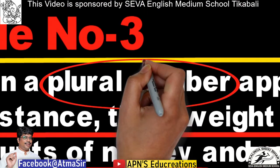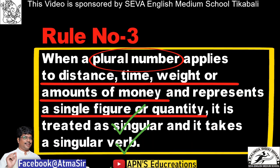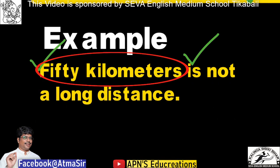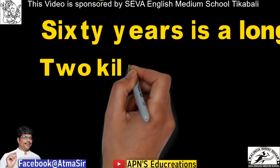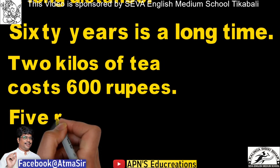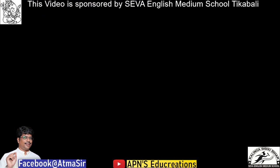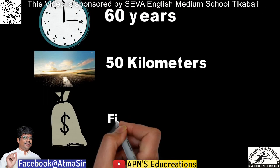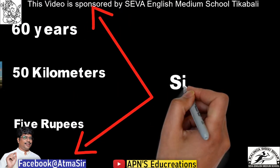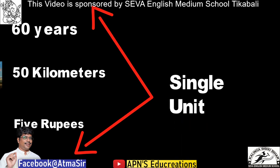Our rule says: if a plural number applies to distance, time, weight, or amounts of money and represents a single figure or quantity, it is treated as singular. Some more examples: '60 years is a long time,' '2 kilos of tea costs 600 rupees,' and '5 rupees is not a big sum.' In these cases, 60 years, 50 kilometers, and 5 rupees are each considered one unit, so we treat them as singular subjects and use singular verbs.